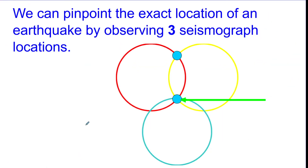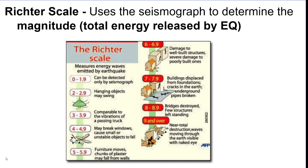In order to find out the exact epicenter of an earthquake, you need three seismic stations. Wherever the three circles intersect is where the epicenter is going to be — you can't do it without three seismograph stations. The Richter scale is the scale we use to determine how strong the earthquake was, measured in magnitude, which is pretty much the power of the earthquake.